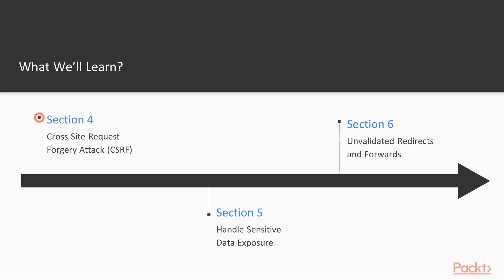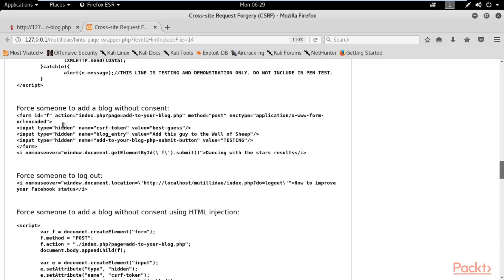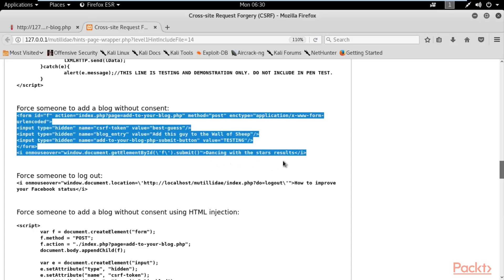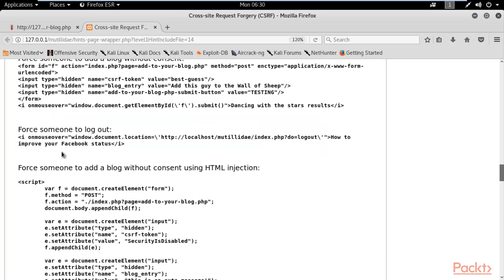In Section 4 we'll learn about Cross-Site Request Forgery (CSRF) attacks. We'll start with an overview of what CSRF is and how it works, then look at how to change operations in applications and how you can manipulate them.